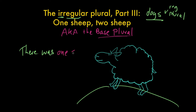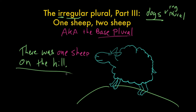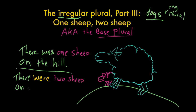There was one sheep on the hill. That's a sentence. What if we put another little baby sheep on that hill — a little lamb? Now the sentence looks like this: there were two sheep on the hill. The only difference between these two sentences is that there's one sheep and two sheep, and therefore the verb changes to a plural conjugation. There was one sheep; there were two sheep on the hill. But everything else stays exactly the same — one sheep, two sheep. This is very strange. It's a base plural.